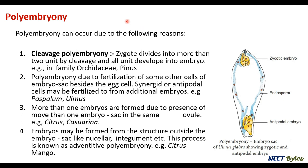One of the most popular methods is cleavage polyembryony, where a zygote divides into more than two units by cleavage and all units later develop into embryos — as observed in orchids and Pinus. Pinus is well known for cleavage polyembryony. Polyembryony may also occur due to fertilization of other cells of the embryo sac besides the egg, such as synergids or antipodal cells — as observed in Ulmus. A third case is when more than one embryo sac is present in the same ovule, leading to polyembryony — as observed in citrus and Casuarina.